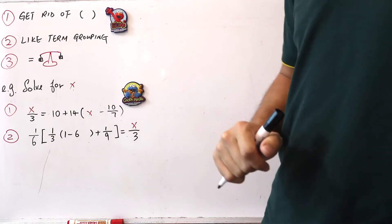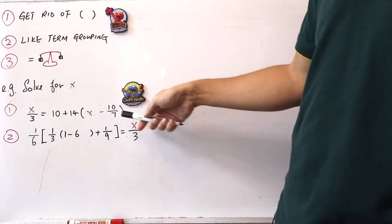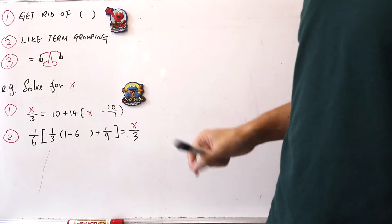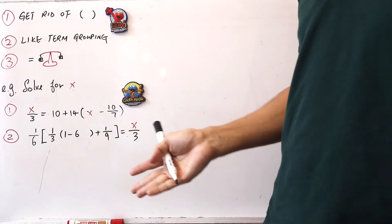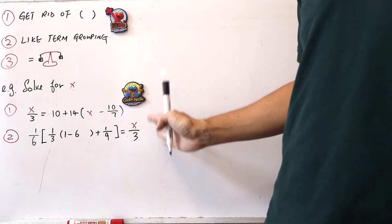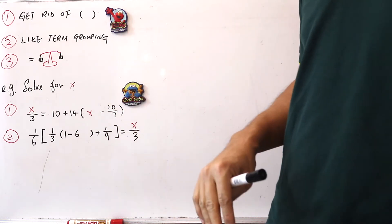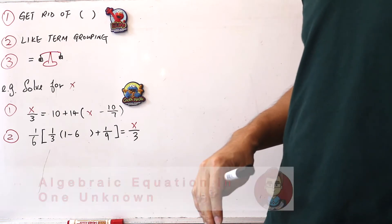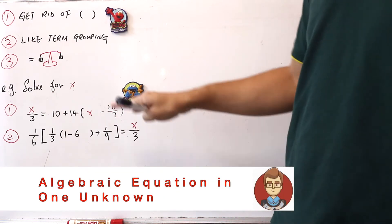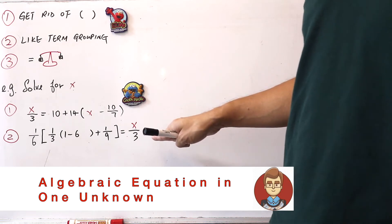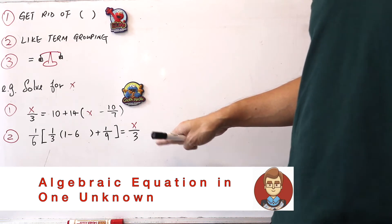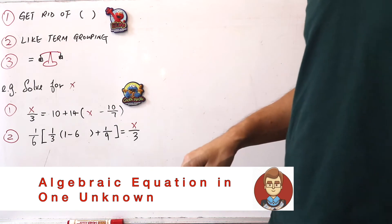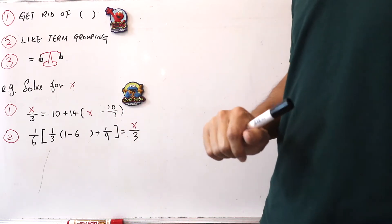In this video, I'll be doing two examples shown here on the whiteboard — example number one and example number two. For most students, these will appear in a chapter called Algebraic Equation in One Unknown. Some students feel very challenged by these questions because they seem to involve a lot of mathematical operations. But I'm going to teach you a simple way to do it.